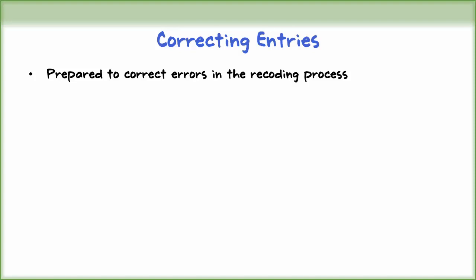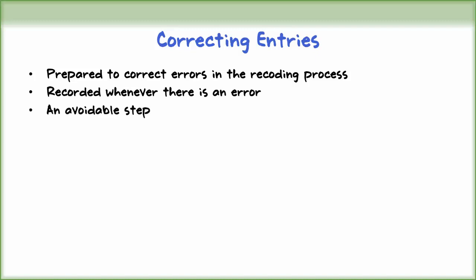Unfortunately, errors may occur in the recording process. Companies correct errors by journalizing and posting correcting entries. Correcting entries are made whenever an error is discovered. Recording correct entries is an avoidable step if records are error-free — then there is no need to prepare correcting entries. Correcting entries must be recorded before closing entries.